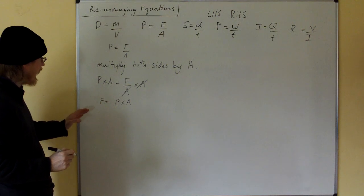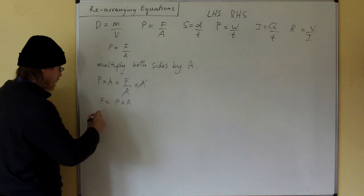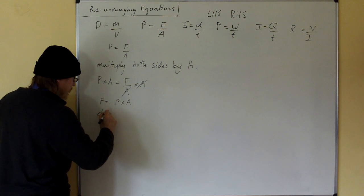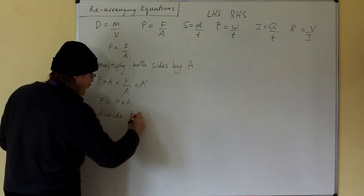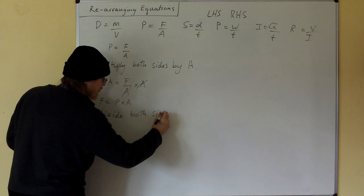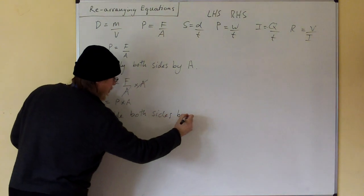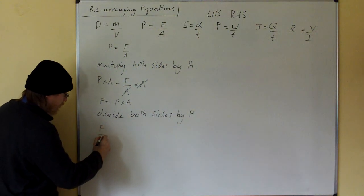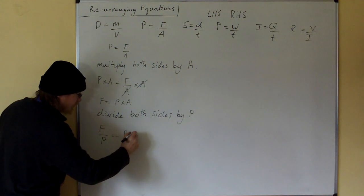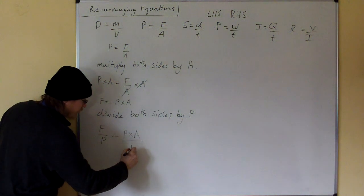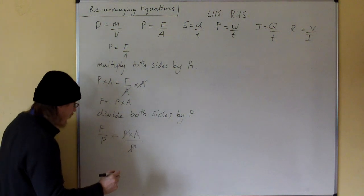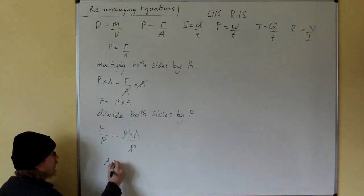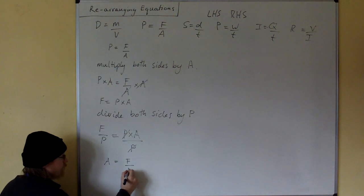Now we want to get area by itself. So we divide both sides by pressure. So we get force over pressure equals pressure times area over pressure. The pressure cancel, and we get area equals force over pressure.